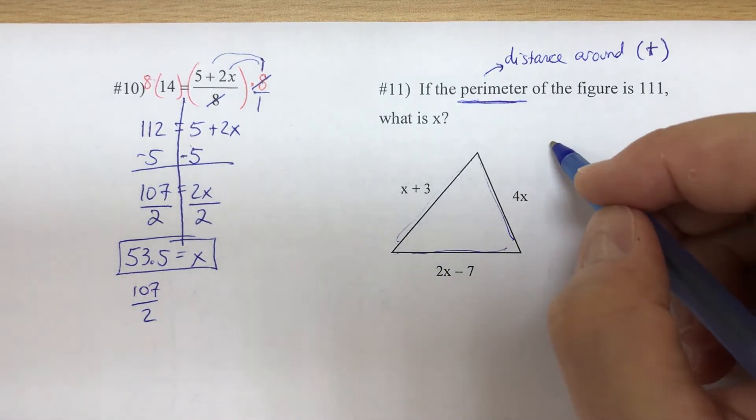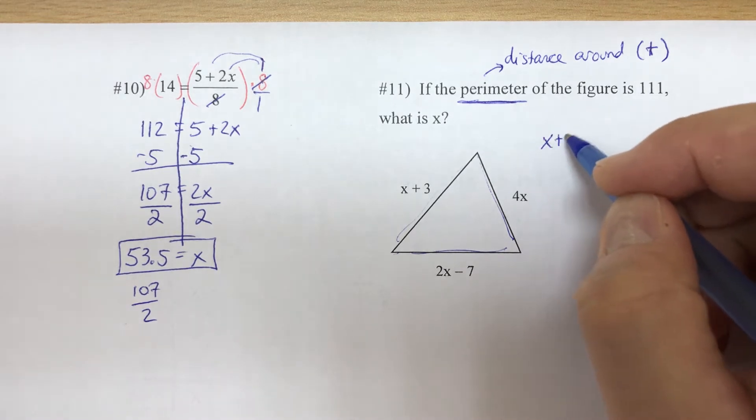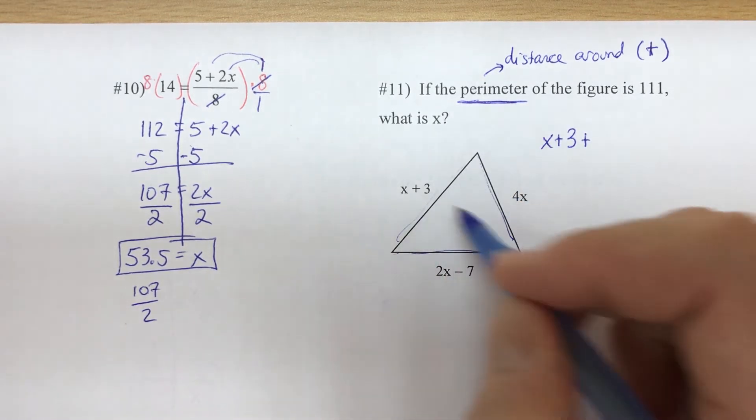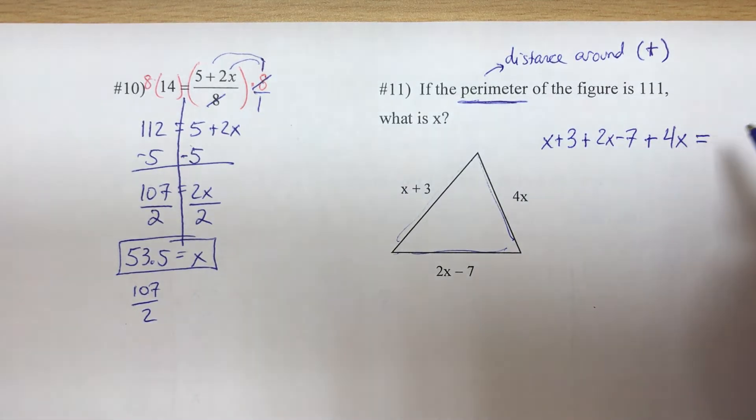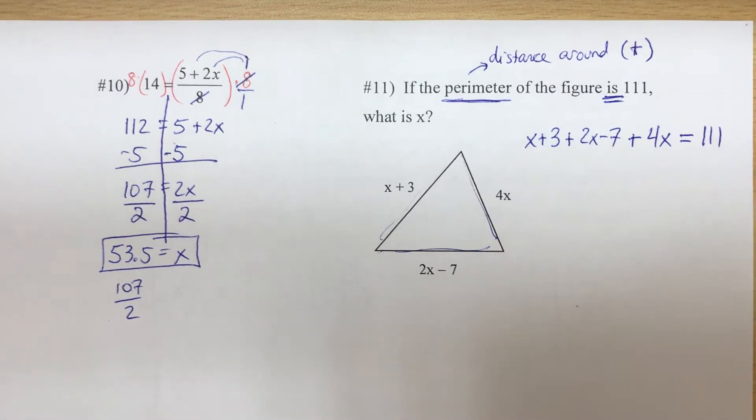You can do them in any order, but I'm going to write x plus 3, the left side, plus the bottom which is 2x minus 7, plus the right side 4x. 'Is' means equals, and they tell us the perimeter is 111.